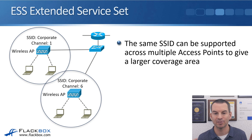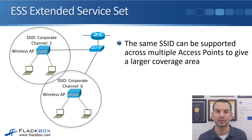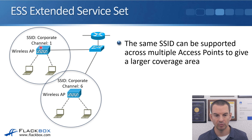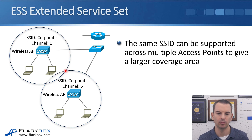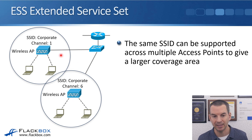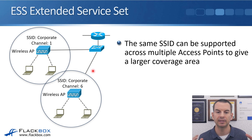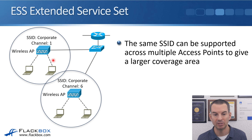ESS is an Extended Service Set. The same SSID can be supported across multiple access points to give a larger coverage area. In the example here, we've got our corporate SSID with a wireless AP on the left with its coverage area — its BSA — and another wireless AP with its own BSA. We can keep adding additional wireless APs in our building until we cover the entire area. When you do that, you want neighboring wireless APs to use different channels so they don't interfere with each other. I'll cover that in more detail in a later lecture.